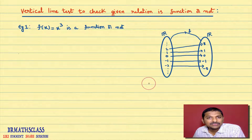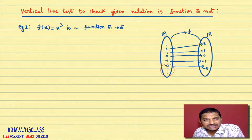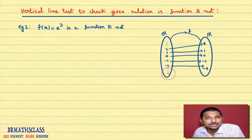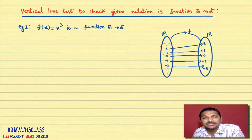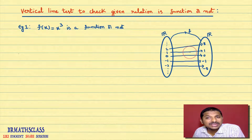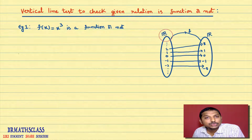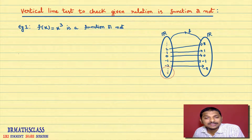From the previous class, we learned one trick: every element in the first set must be used, and it is used only once. You can observe here that every element in the first set is used only once, so it appears to be a function. However, it is not very clear because between two numbers there are infinitely many real numbers. Since it is an infinite set, it is better to use the graph method to check whether this relation is a function or not.